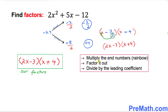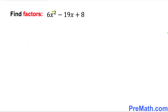So our factors are 2x minus 3 times x plus 4, and that is our answer. Let's recap: the first step was multiplying the end numbers to create a rainbow, giving us negative 24. Then we factored negative 24 into negative 3 and positive 8 — multiplying gives negative 24, adding gives positive 5. Finally, we divided by the leading coefficient 2.